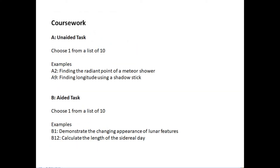For the coursework you do two tasks, and for each task you choose from a list of ten options. Task A is unaided — meaning without a telescope — and Task B is an aided task which requires a telescope. You can buy a telescope for about a hundred pounds, borrow one, or work with a small group where someone has one. You can get a decent refracting telescope from somewhere like telescopehouse.com or eBay — even second hand.